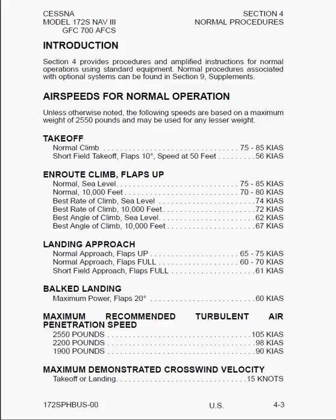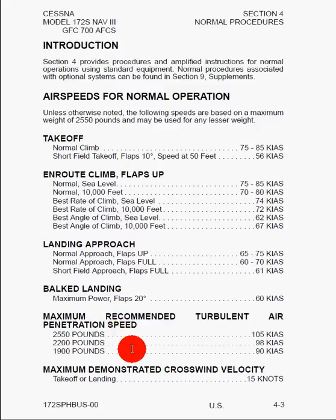And if you have any non-standard equipment, i.e. additional options you may have purchased for your aircraft, you can find that information in Section 9. Here we can see the important airspeeds, or V-speeds. Unless otherwise noted, these speeds are based on a maximum weight of 2,550 pounds and may be used for any lesser weight. The only exception is the maximum recommended turbulent air penetration speed, which decreases as the weight of the aircraft goes down. The maximum demonstrated crosswind velocity is 15 knots.